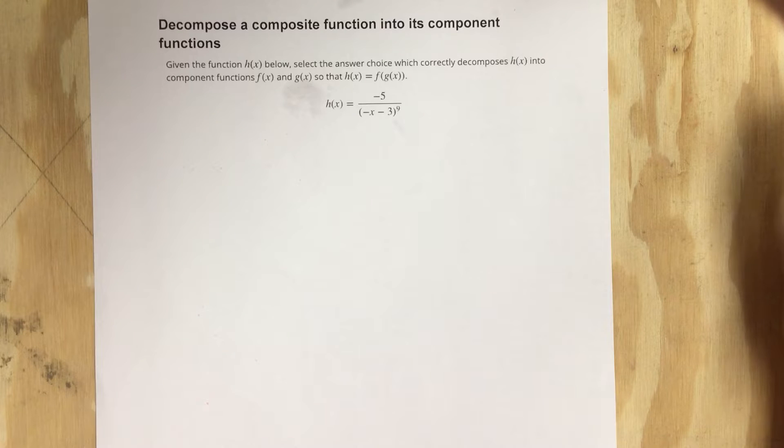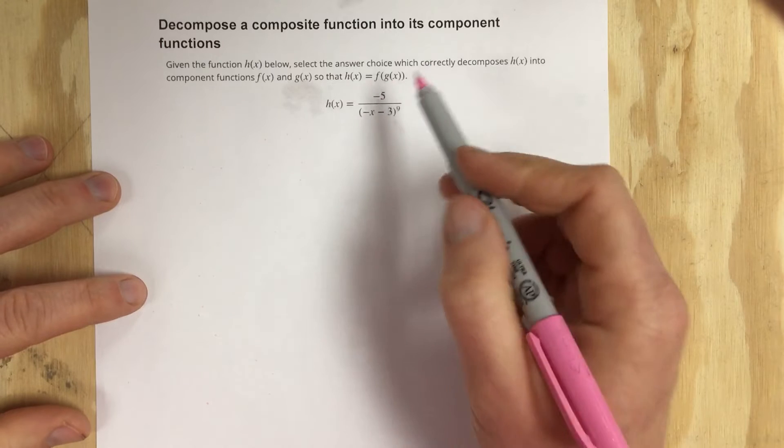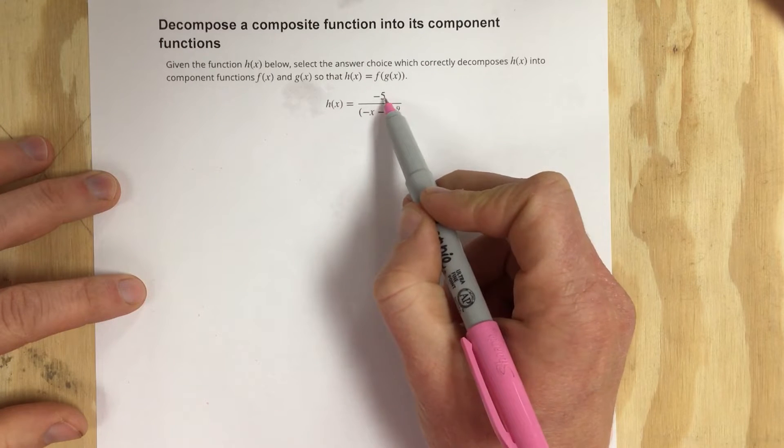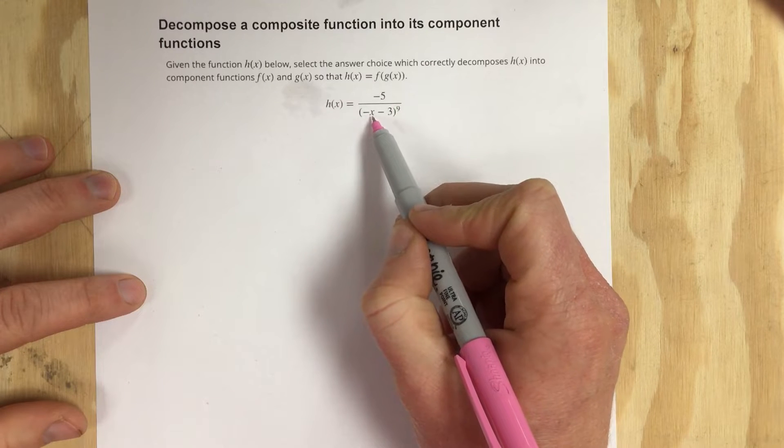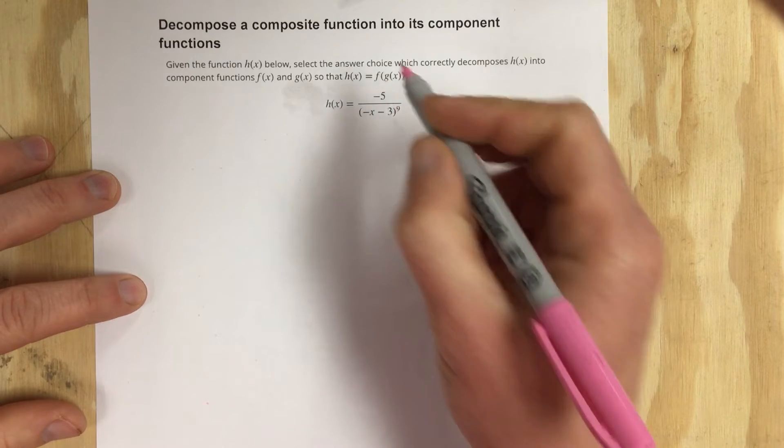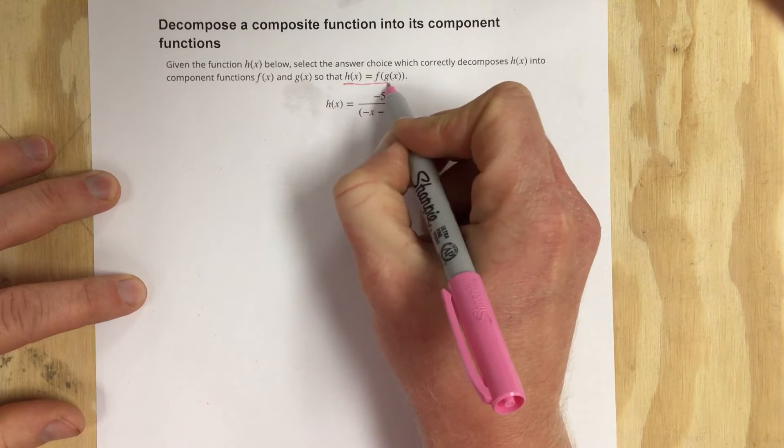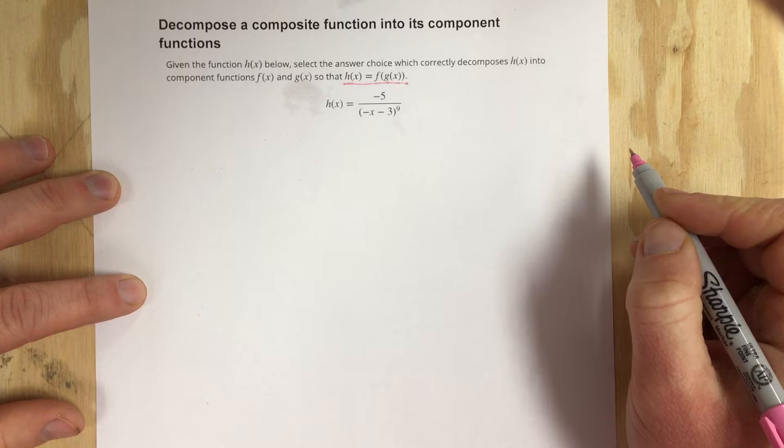In this video we're going to decompose our composite function into its component functions. They give you h of x equals negative 5 over negative x minus 3 to the 9th power and they want you to focus on that h of x is f of g of x.